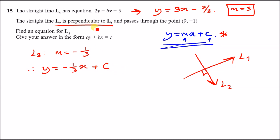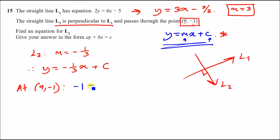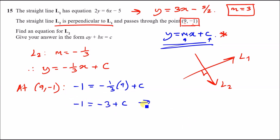We know that this perpendicular line passes through the point (9, −1), so plug in this coordinate. We know x = 9 and y = −1, and we can get the value of c. So at (9, −1): −1 = −(1/3) × 9 + c. Simplifying, −(1/3) × 9 gives us −3, so −1 = −3 + c. Adding 3 across, −1 + 3 = 2, so c = 2.